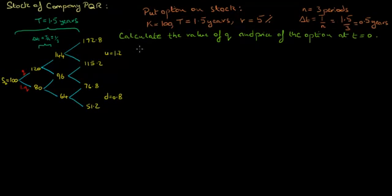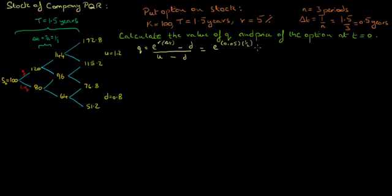Let's start by calculating the value of Q. The risk-neutral probability of the stock price going up equals the exponential of the discount rate times delta T, minus D, divided by U minus D. Plugging in the values, we get exponential of 5% times 0.5, minus D which equals 0.8, divided by U which equals 1.2 minus D. This equals 0.56, so the risk-neutral probability of the stock price going up in each period is 0.56.